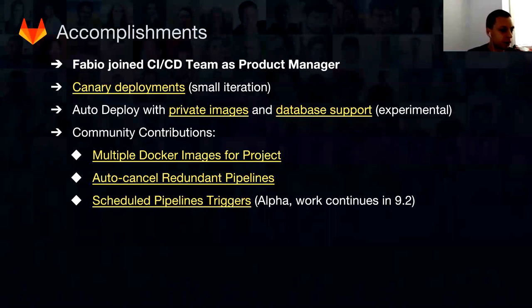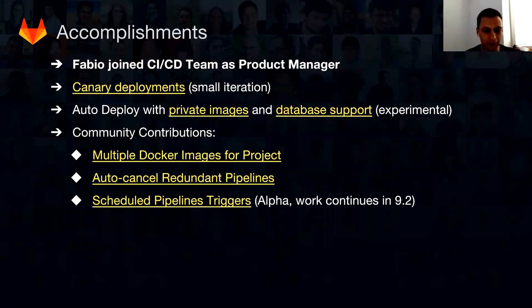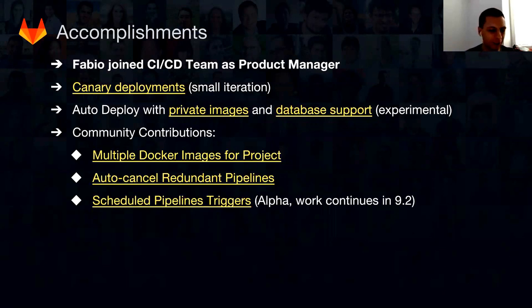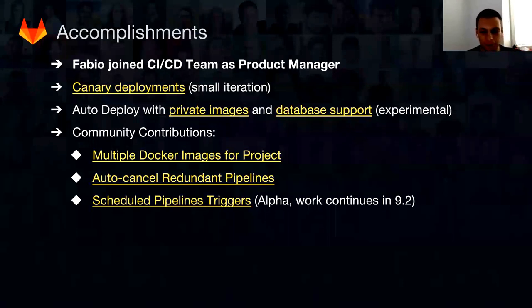Canary deploy boards support Heroku build packs and databases, all in basically one package. One of the very cool achievements from 9.1 is that we managed, with joined forces from the community, to ship three awesome features — all quite highly requested. With 9.1 you can have multiple Docker images for your project, you can auto-cancel pipelines (we'll probably enable auto-cancel pipelines on GitLab CI quite soon), and also scheduled triggers. Scheduled triggers — in 9.2 it will be called pipeline schedules — is a feature requested for over a year. It's an amazing contribution.